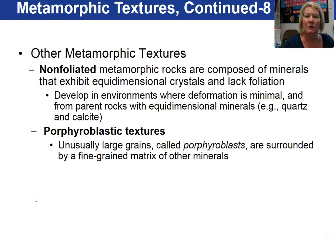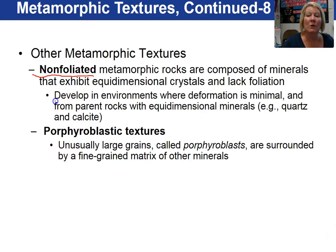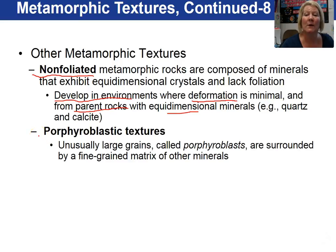Other metamorphic textures besides foliated are non-foliated. These metamorphic rocks are made up of minerals that are equidimensional in shape, meaning the x, y, and z axes are the same. This occurs in environments where deformation is minimal and the parent rock has equidimensional grains like quartz or calcite. Another texture that's quite interesting is the porphyroblastic texture, where you get unusually large grains — such as garnets, called porphyroblasts — surrounded by a fine-grained matrix, usually of a mica.